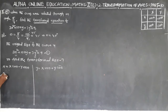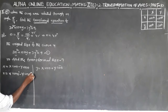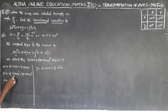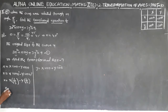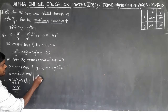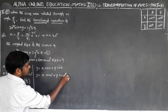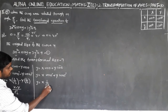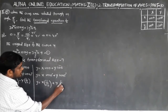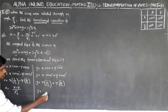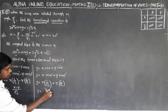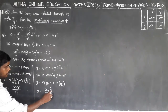Now substitute theta = 45 degrees. Small x = X cos 45° − Y sin 45° = X·(1/√2) − Y·(1/√2) = (X − Y)/√2. Small y = X sin 45° + Y cos 45° = X·(1/√2) + Y·(1/√2) = (X + Y)/√2.